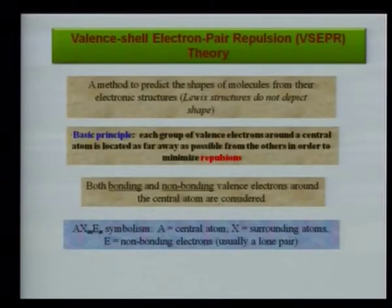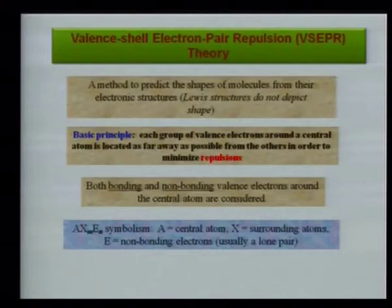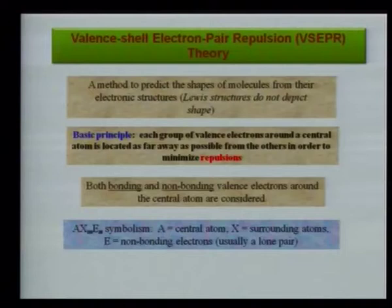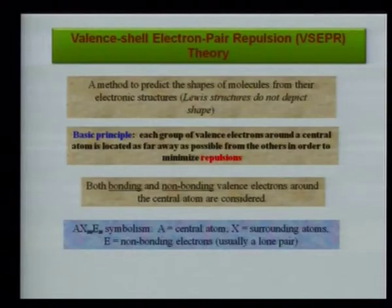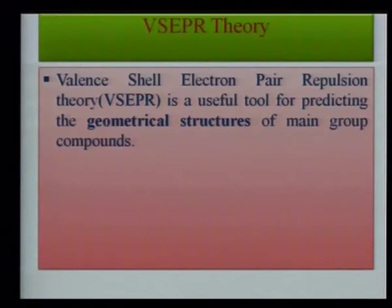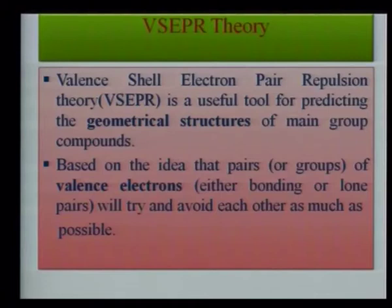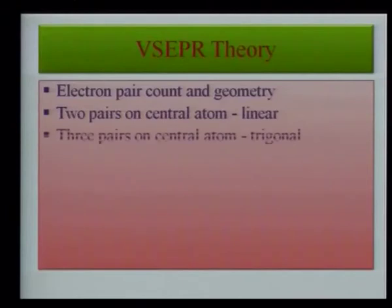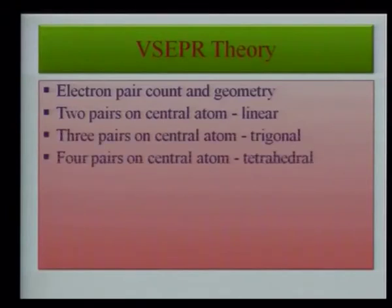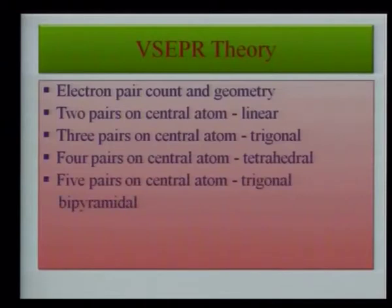The basic principle of VSEPR theory: each group of valence electrons around the central atom is located as far away as possible from the others in order to minimize repulsion. Both bonding and non-bonding valence electrons around the central atom are considered. Using the AXₘEₙ notation: A = central atom, X = surrounding atoms, E = non-bonding electrons (lone pairs). Electron pair geometries: 2 pairs → linear; 3 pairs → trigonal planar; 4 pairs → tetrahedral.